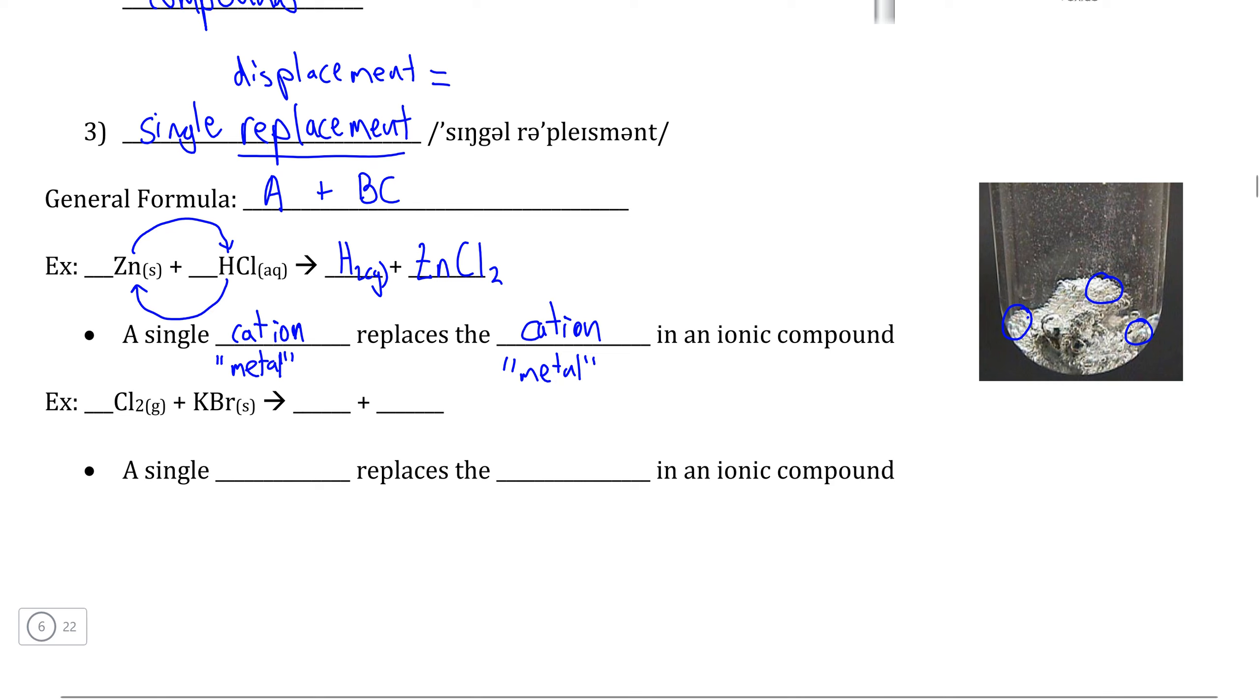So if we go to our general formula that we see here, we see that element A is displacing or replacing element B in the compound BC. So that means in our products, element B is going to be by itself. This, again, is usually some sort of metal, but alternatively, it can be an element that functions as a cation in an ionic compound.